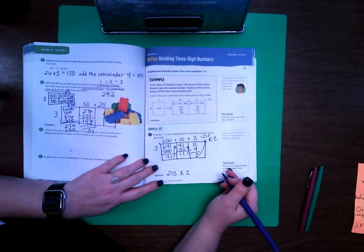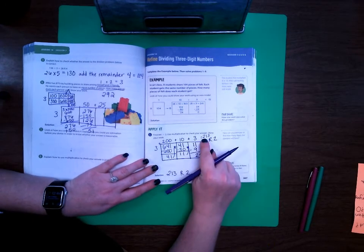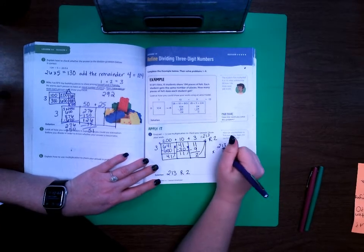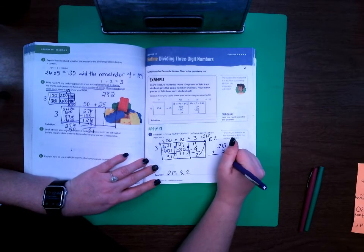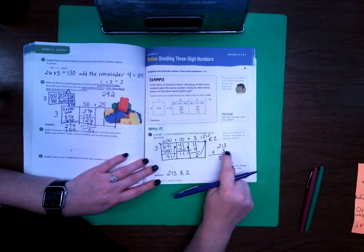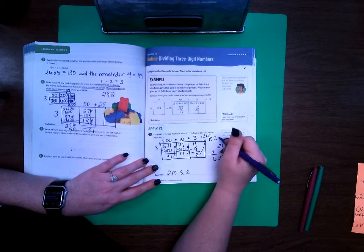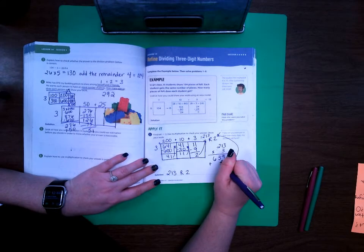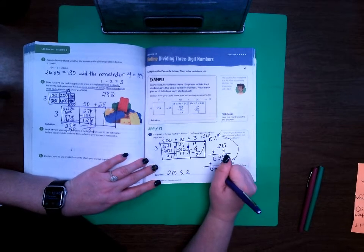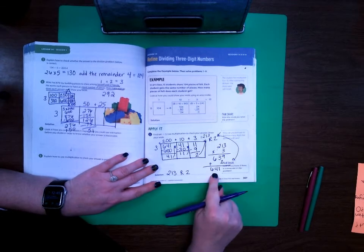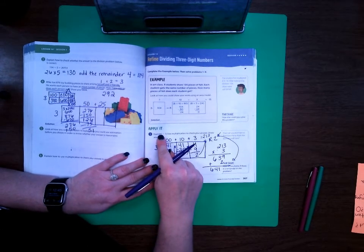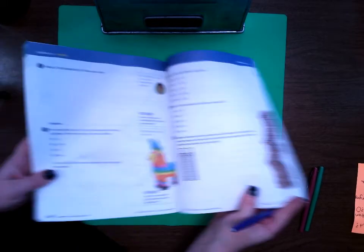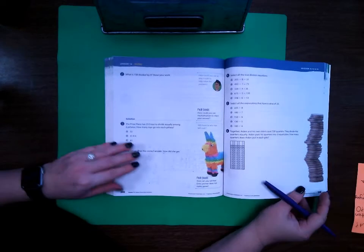Now if I want to check my answer I can do 213 times 3. 3 times 3 is 9, 3 times 1 is 3, 3 times 2 is 6. But then remember how I had this remainder right here? I have to add that to it so plus 2 makes 641. And is that the number I started with? Yes it is. That means that my answer is correct. Let's go ahead and move to page 308.